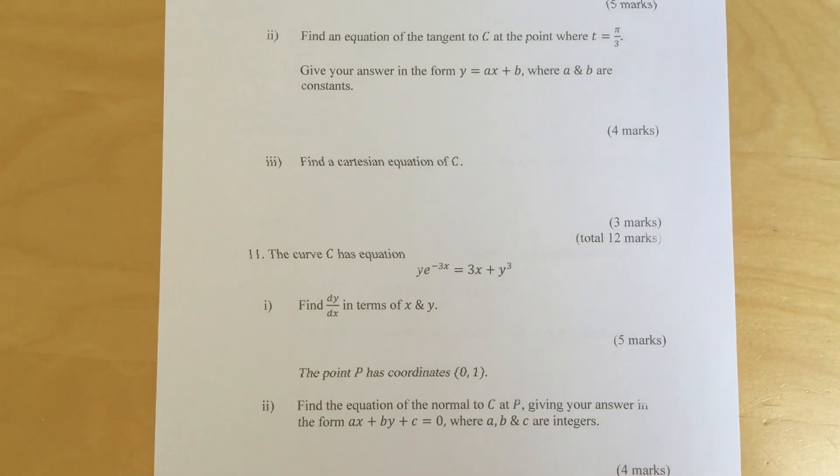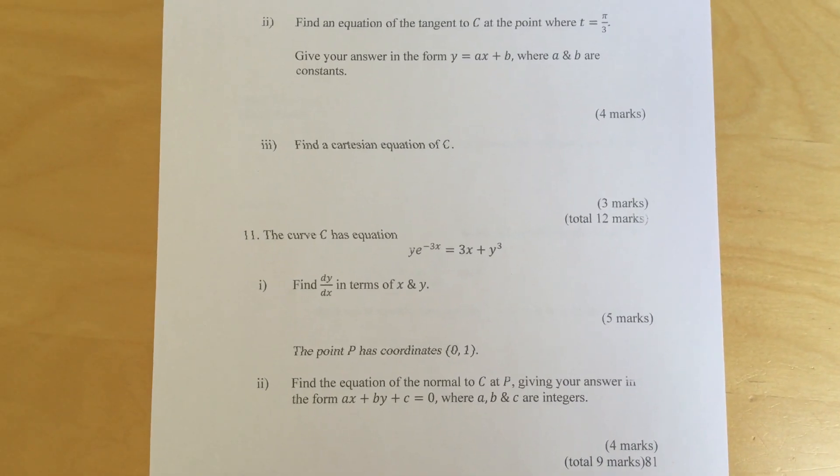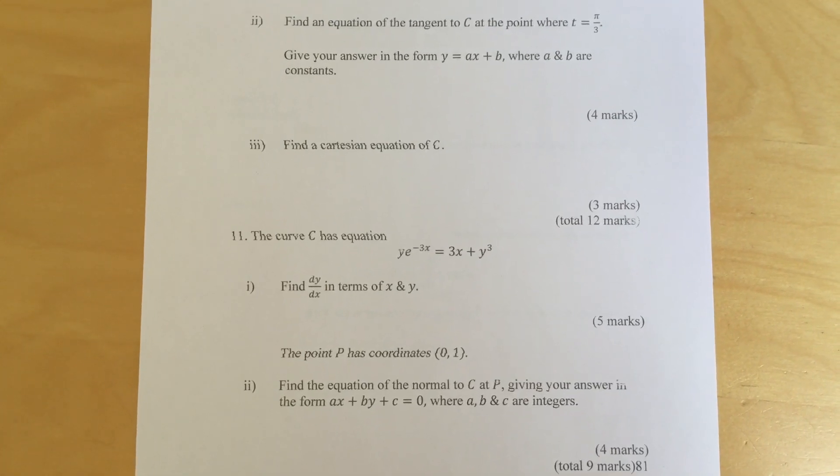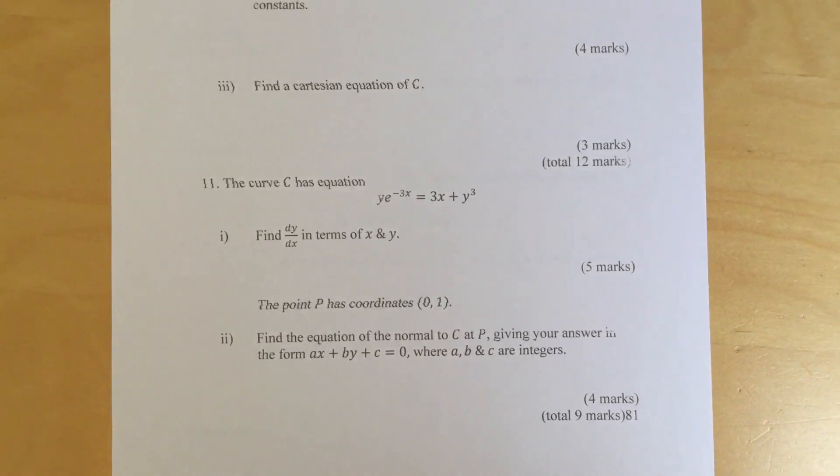The point p has coordinates 0, part 2. Find the equation of the normal to c at p giving your answer in the form ax plus by plus c equal to 0 where a, b and c are integers.